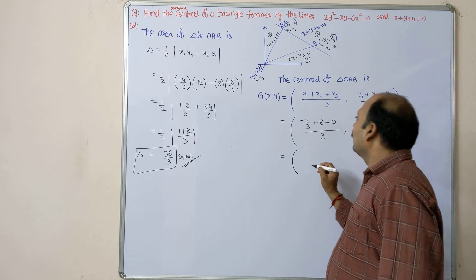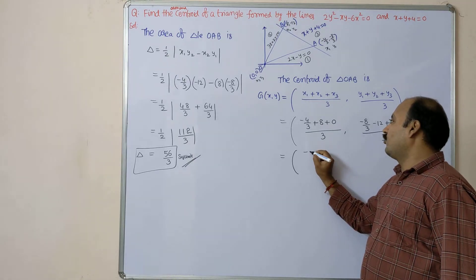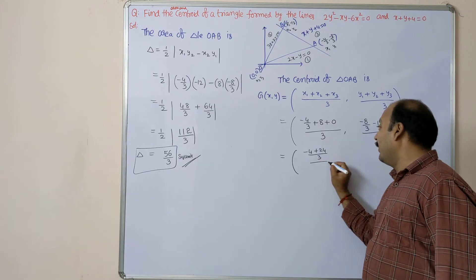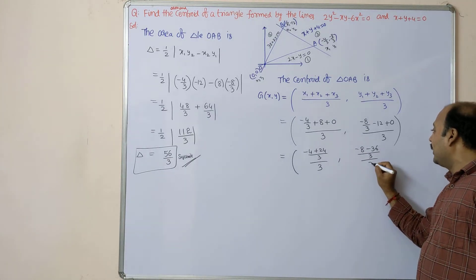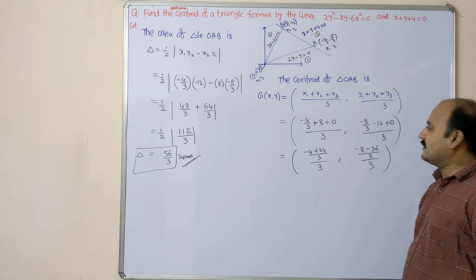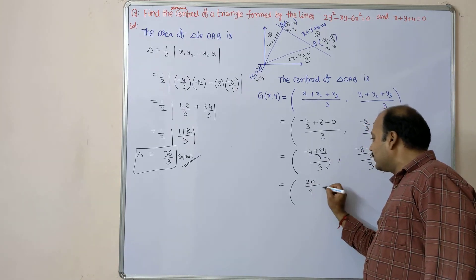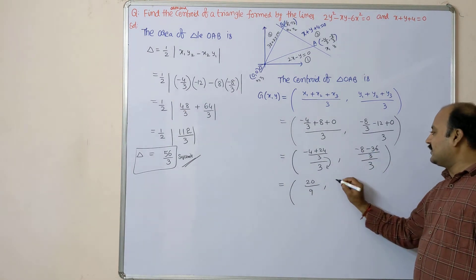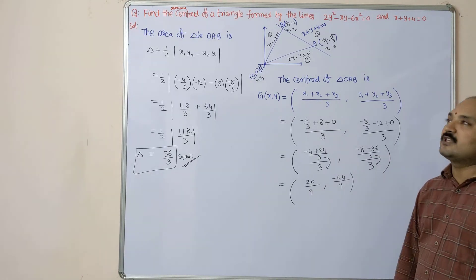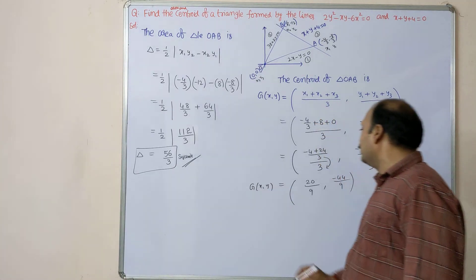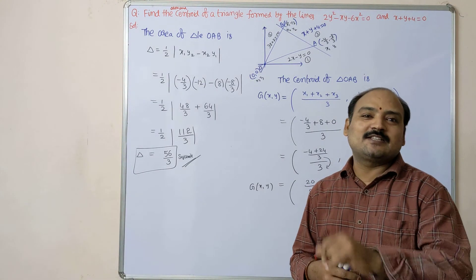Taking LCM for the x-coordinate: (-4 + 24)/3 all divided by 3 = 20/3 ÷ 3 = 20/9. For the y-coordinate: (-8 - 36)/3 divided by 3 = -44/3 ÷ 3 = -44/9. Therefore the centroid G(x, y) = (20/9, -44/9). I hope you understand, students. I will meet you in the next video.